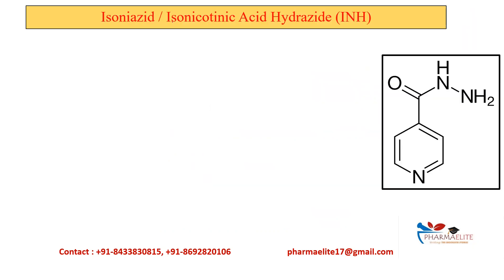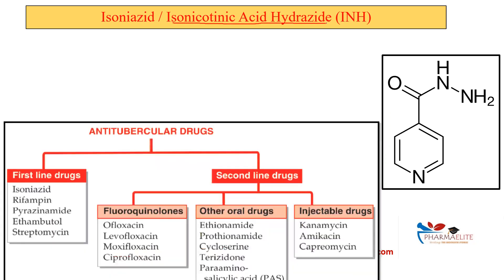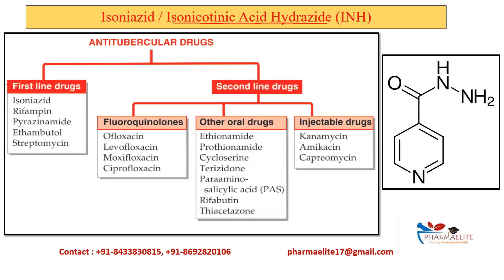Isoniazid is also known as isonicotinic acid hydrazide. Isoniazid is a first-line antitubercular agent. Along with Isoniazid, we have other drugs such as rifampicin, pyrazenamide, ethambutol, and streptomycin. Isoniazid is represented by single letter H, rifampicin by R, pyrazenamide by Z, ethambutol by E, and streptomycin by S. These are all the first-line antitubercular drugs, and there are also second-line antitubercular agents.